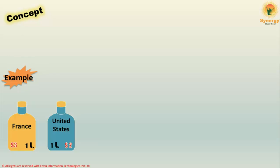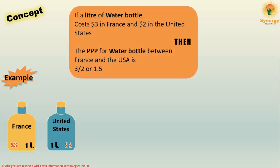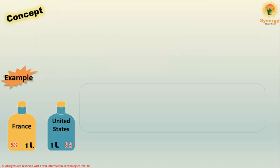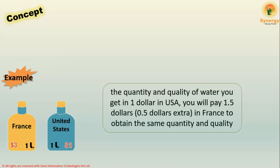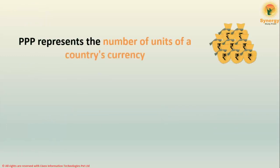Let's take an example of PPP calculation at the product level. The sample product taken here is a one-liter water bottle. If it costs three dollars in France and two dollars in the United States, then to calculate PPP we divide the price of the water bottle between France and the USA — that is, three divided by two — which equals 1.5. This means that the quantity and quality of water you get for one dollar in the USA will cost you 1.5 dollars in France.